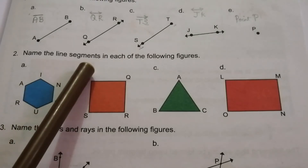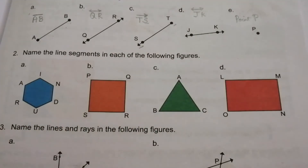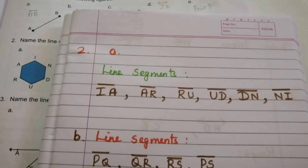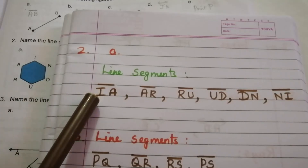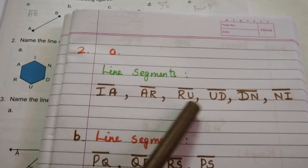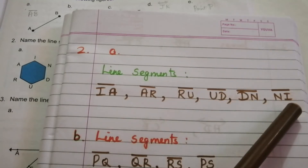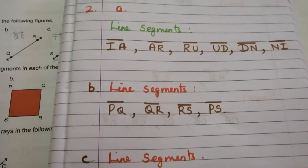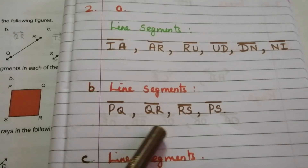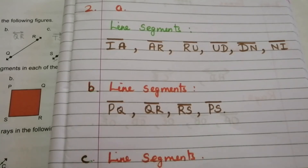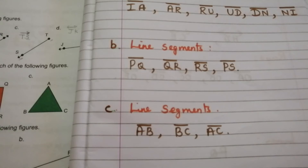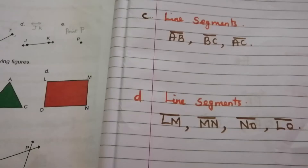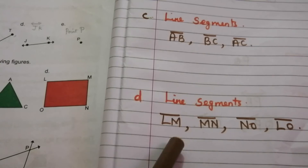Question 2: Name the line segments in each figure. (a) IA, AR, RU, UD, DN, NI. (b) PQ, QR, RS, PS. (c) AB, BC, EC. (d) LM, MN, NO, LO.